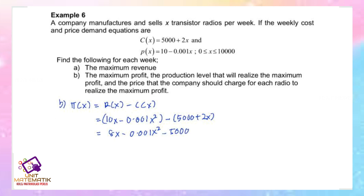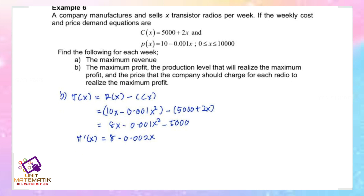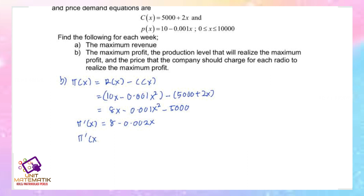To find the optimal production level, find the marginal profit: π'(x) = 8 - 0.002x. Equate the marginal profit with zero: 8 - 0.002x = 0, giving x = 4000.